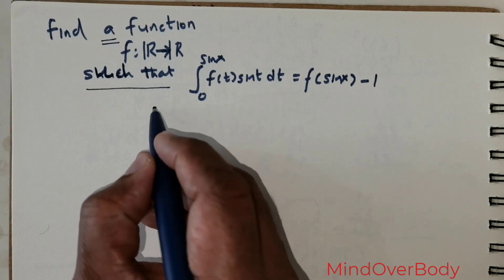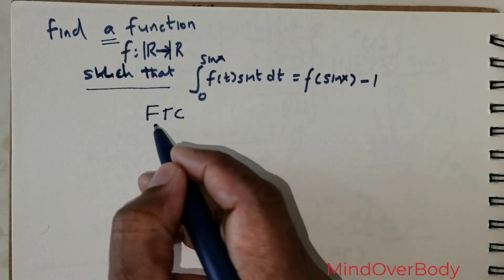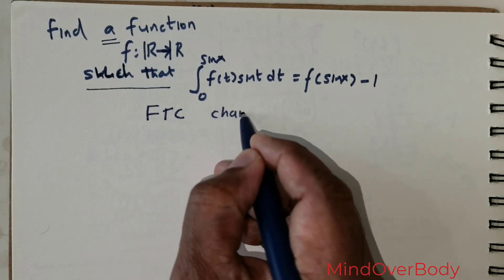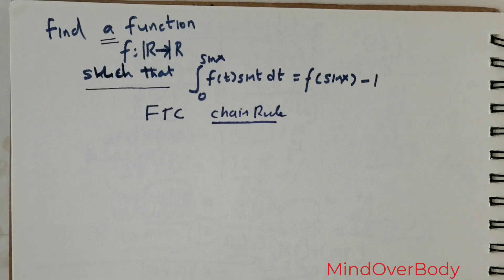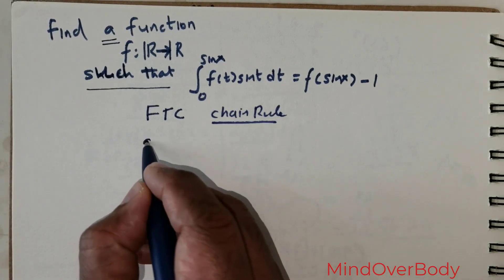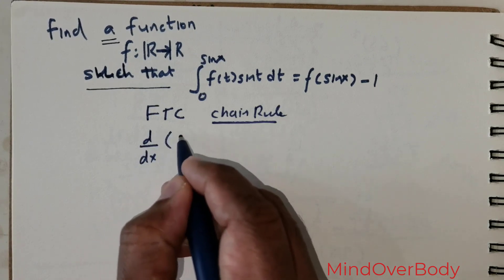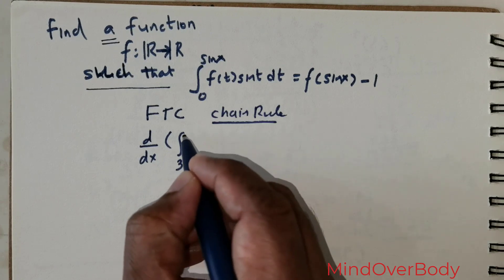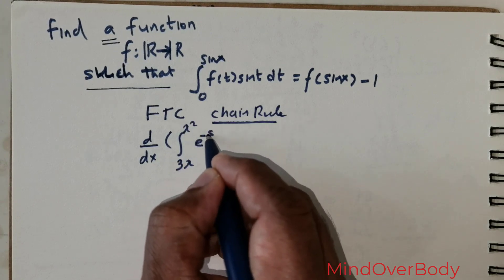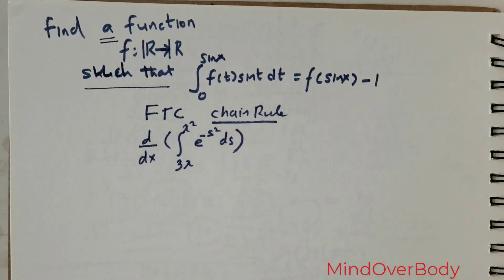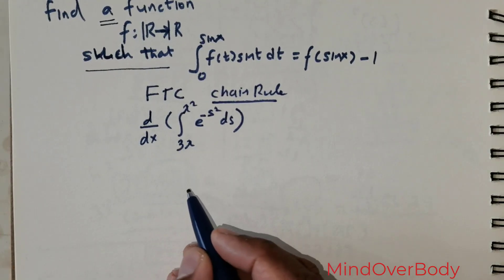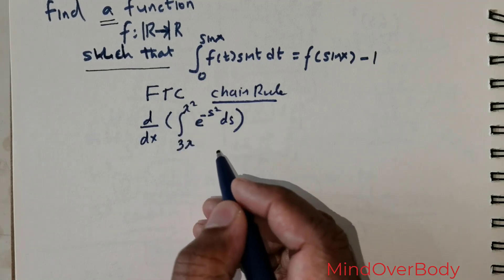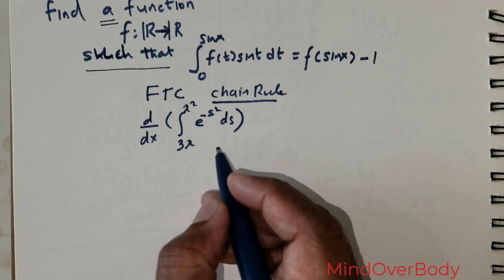To solve this question we would have to use the Fundamental Theorem of Calculus with the chain rule. To understand the Fundamental Theorem of Calculus, I would like to first give a small example. Imagine you are asked to solve d/dx of the integral from 3x to x² of e raised to the power negative s squared ds.